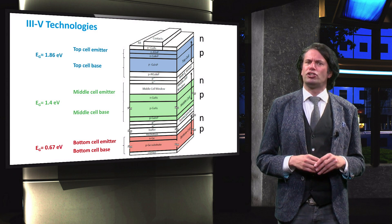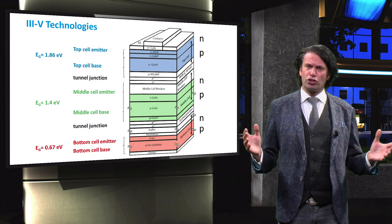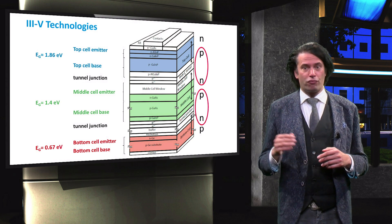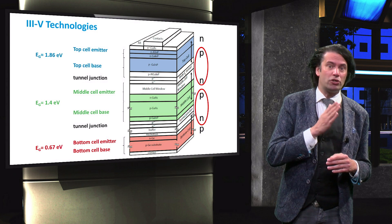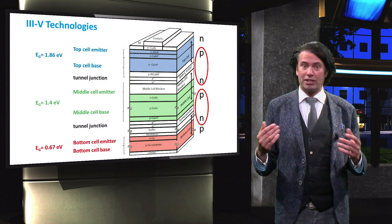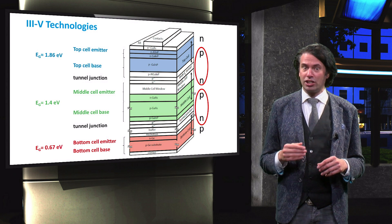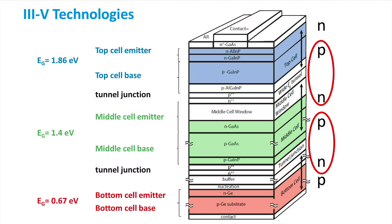In the triple junction cell, two tunnel junctions are present. The tunnel junctions are included to prevent the base from one cell forming a PN junction with the emitter from another cell. Such a PN junction would operate in the reverse direction with respect to the cells, and would therefore significantly lower the voltage of the triple junction device. In the first tunnel junction, the holes in the P layer of the gallium indium phosphide top cell have to recombine with the electrons of the N layer of the gallium arsenide middle cell.